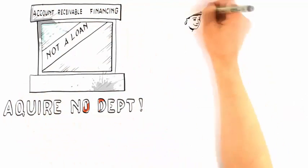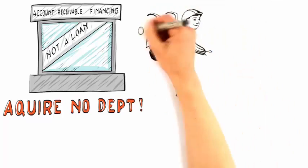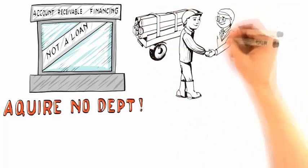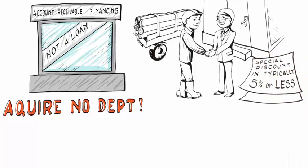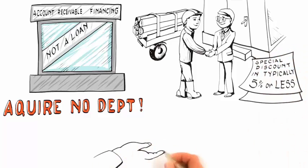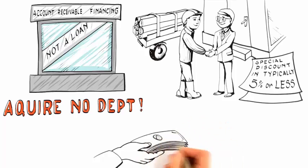Account receivable financing is not a loan, so you acquire no debt. You are simply selling an asset—your receivables—to the source for a discounted price. And the best part is that this special discount is typically 5% or less.